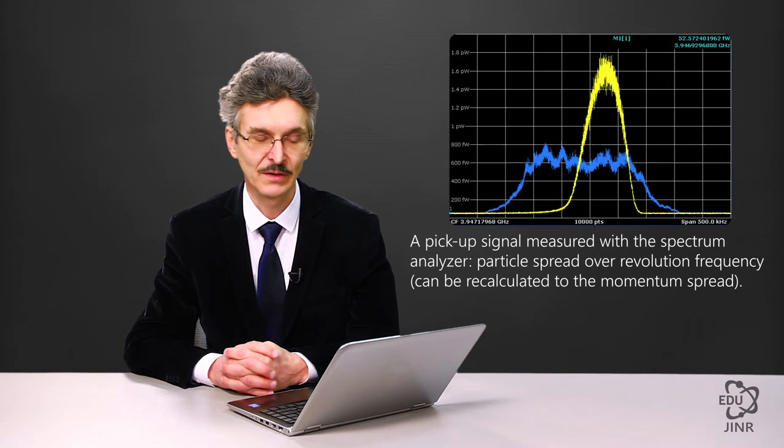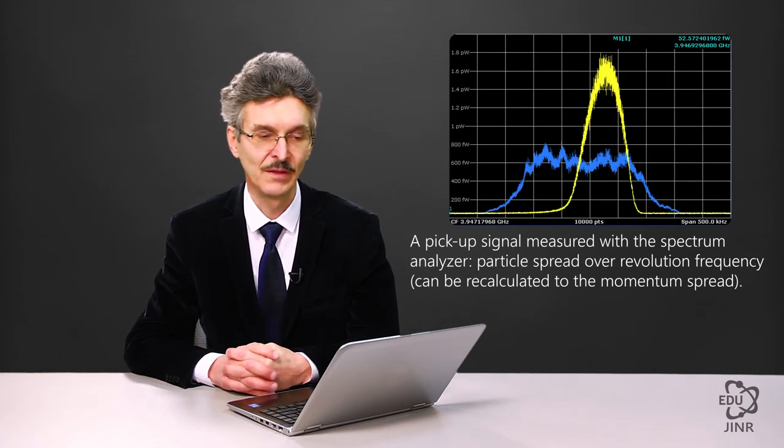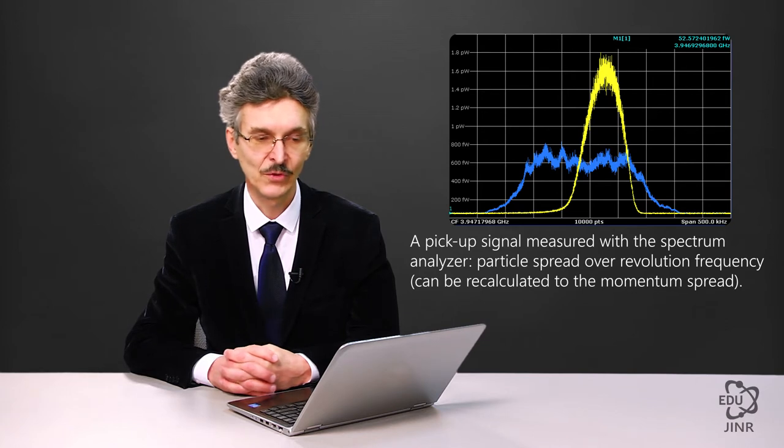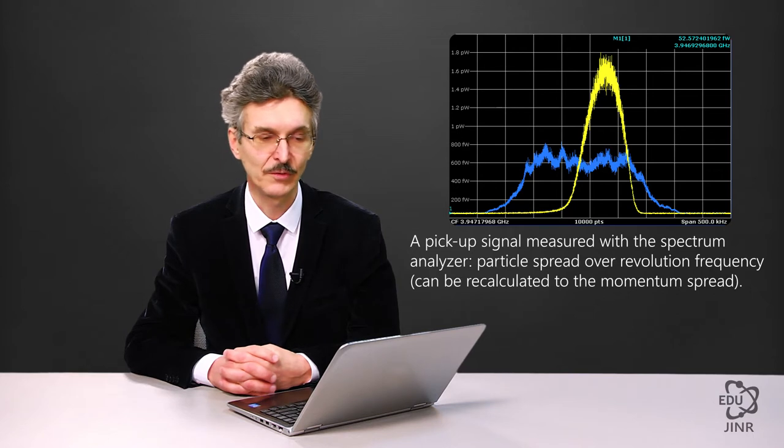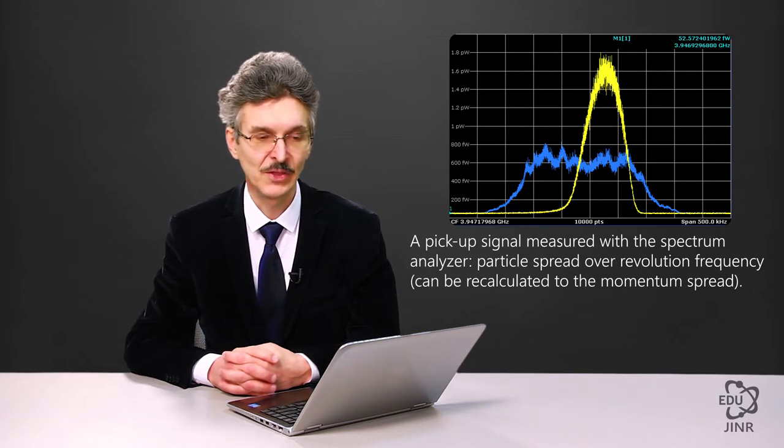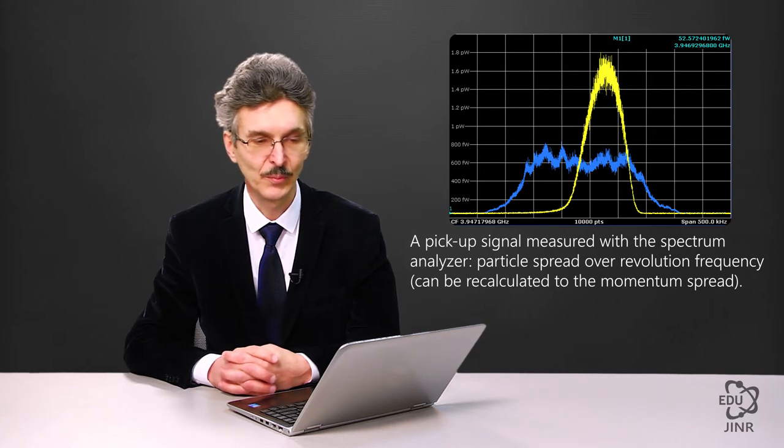This picture depicts the signal of a spectrum analyzer showing two curves. The first one corresponds to the frequency spread in the circulating beam at the beginning of time. The second yellow curve corresponds to the particle spread over revolution frequency after the cooling.